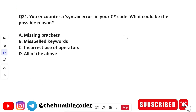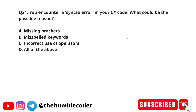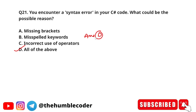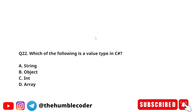You encounter a syntax error in your C sharp code — what could be the possible reason? The options are: A) missing brackets, B) misspelled keywords, C) incorrect use of operators, and D) all of the above. The correct answer is option D — all of the above. Syntax errors can be caused by missing brackets, misspelled keywords, or incorrect use of operators.